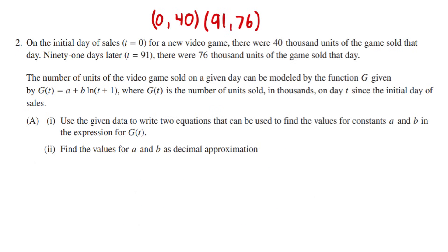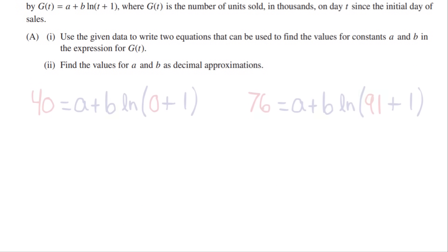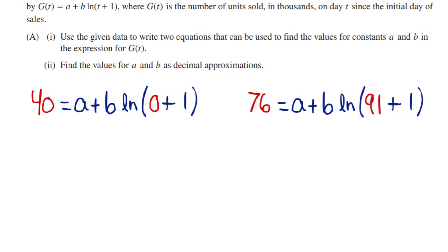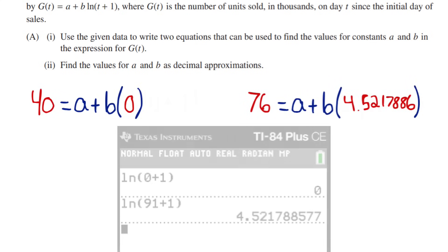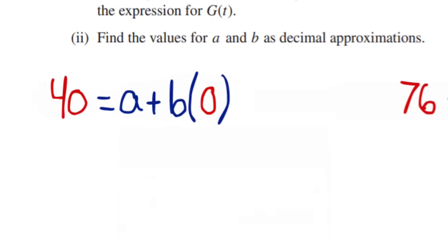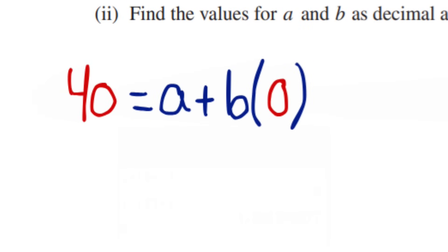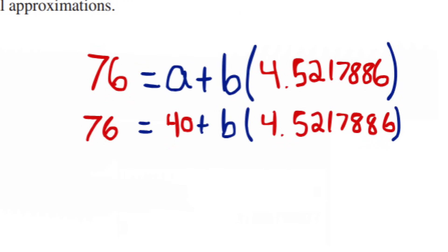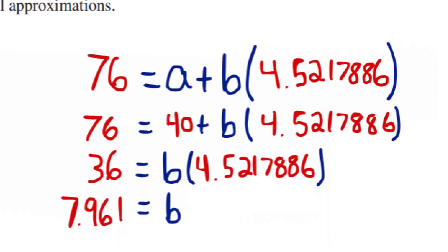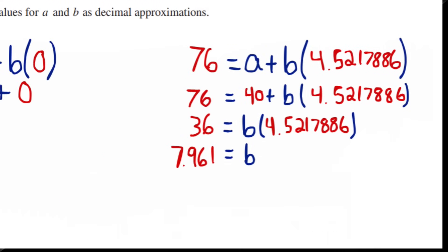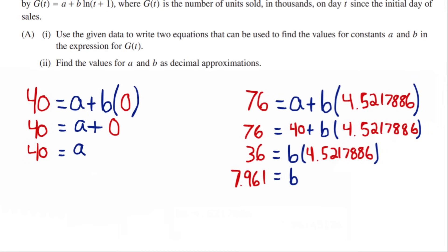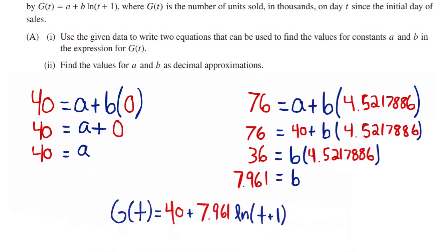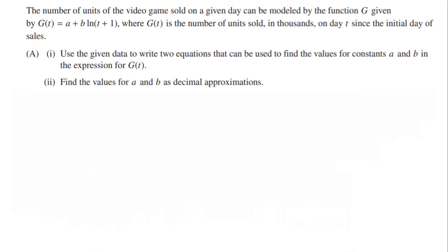Alright, next. Find the values for a and b as decimal approximations. Alright, so now we are going to use these two equations to solve for one function. First, let's simplify each of them by solving each's respective natural logs. Of course we do this with a calculator. We see the first equation is equal now to b times 0, which would just be 0, so we get a equals 40. Now let's plug 40 in for a in the second equation and subtract it from 76. Then dividing, we get b equals 7.961, which of course I found with my calculator. This means our final answer is the function, g(t) = 40 + 7.961*ln(t+1).